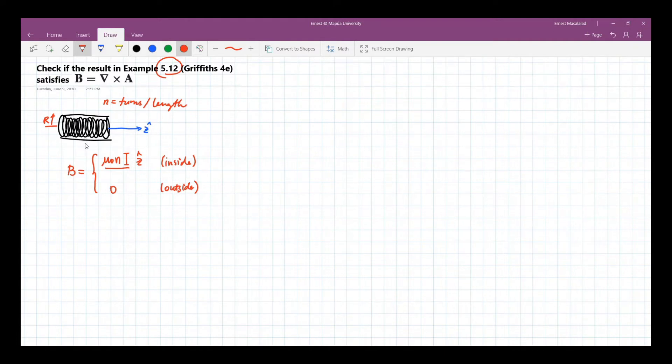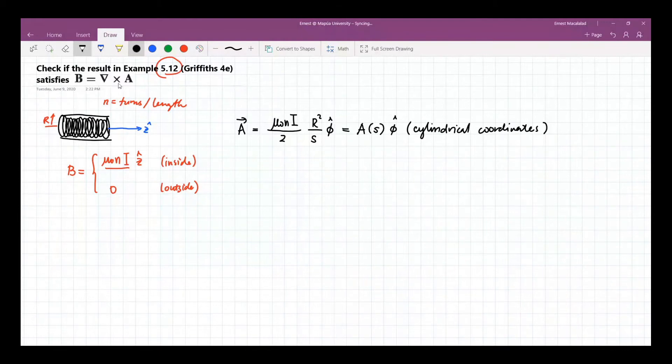The end result here is the magnetic vector potential A is given by mu naught n I over 2 times r squared over s phi hat. You will notice that A is a function of s but along the direction of phi. So now let's check if, indeed, using this relationship, we will be able to get this magnetic field from your magnetic vector potential.